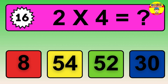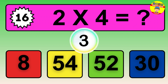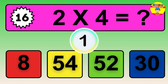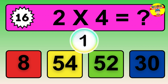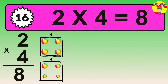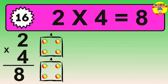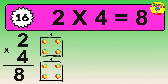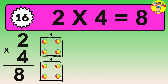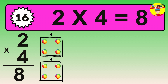Question 16. Two times four equals what? So the answer is two times four is eight. To calculate, we have two groups with four balls each one. So how many balls do we have? Eight balls.